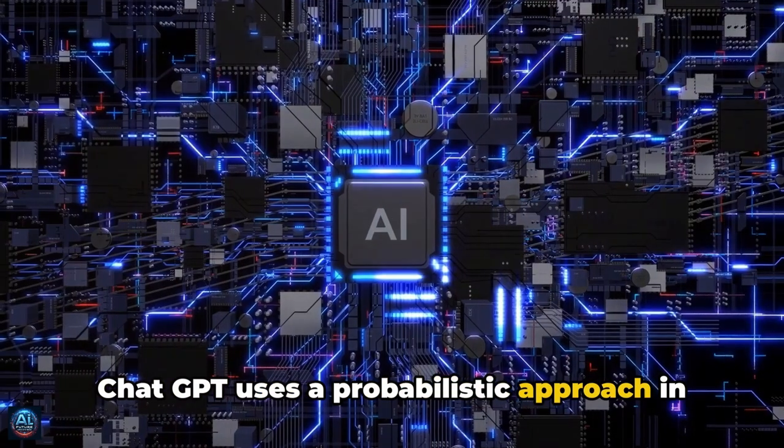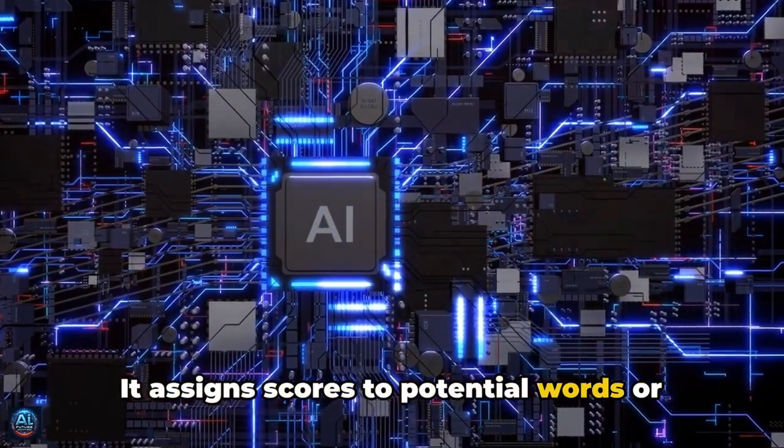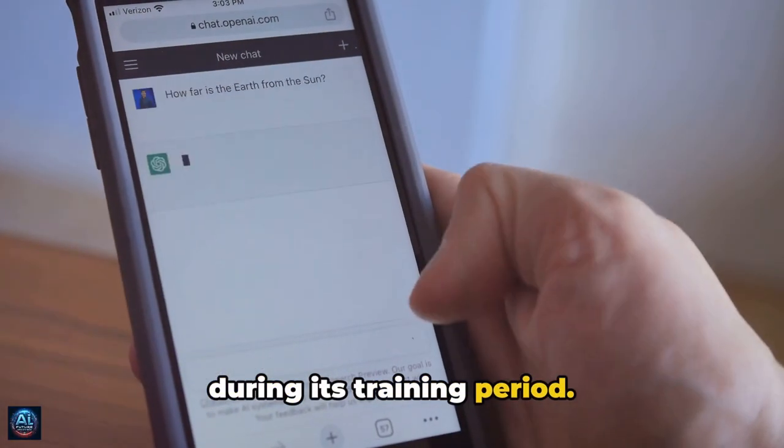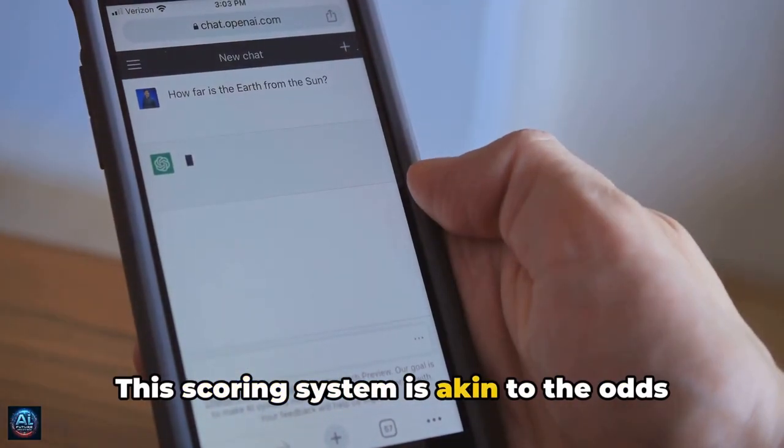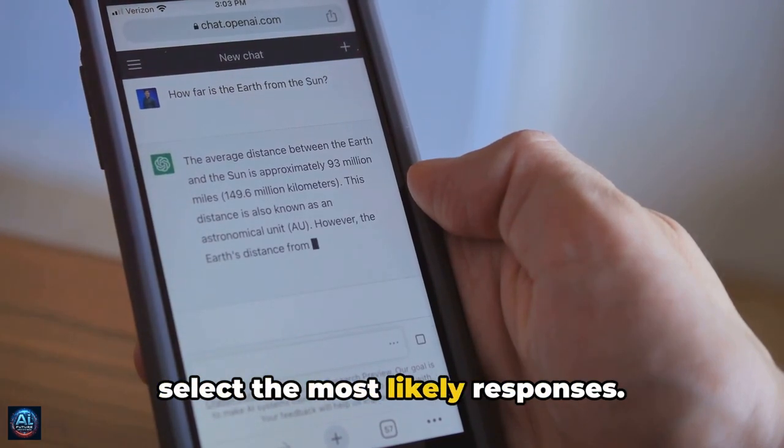ChatGPT uses a probabilistic approach in its response generation. It assigns scores to potential words or phrases based on the patterns it learned during its training period. This scoring system is akin to the odds in a game of chance, guiding the model to select the most likely responses.